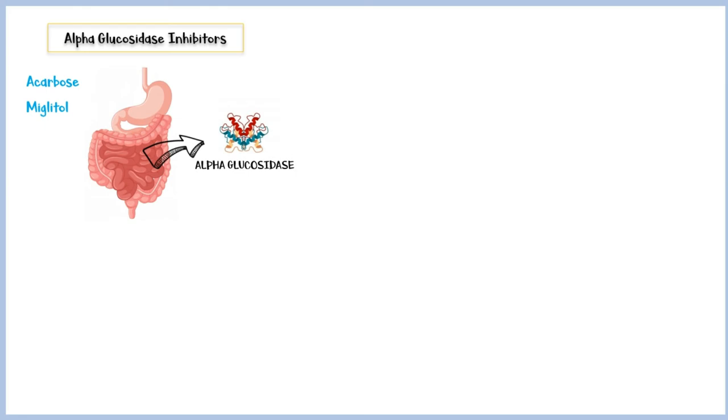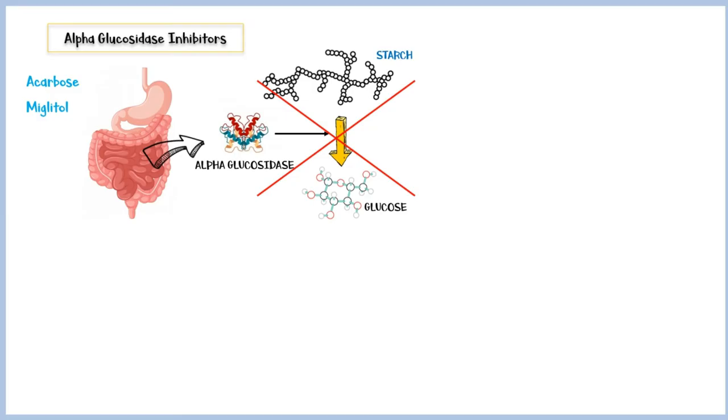Third group of non-insulin secretagogues are alpha-glucosidase inhibitors, which includes the drugs acarbose and miglitol. Alpha-glucosidase is an enzyme found in the brush border of small intestine, and it breaks down complex carbohydrates like starch into their simpler monosaccharide units like glucose, which is eventually absorbed into the blood. Alpha-glucosidase inhibitors prevent this process, and they delay the breakdown of carbohydrates. This ultimately lowers the postprandial blood glucose levels.